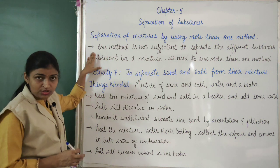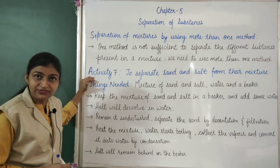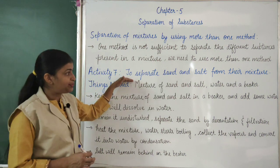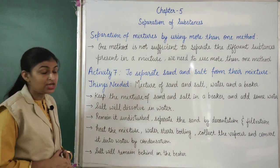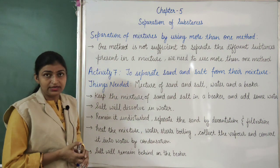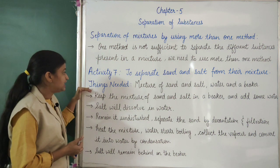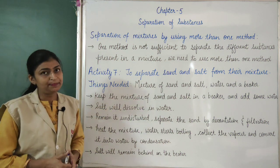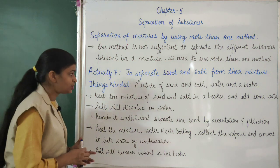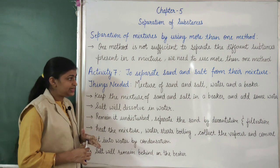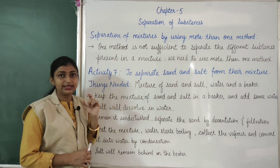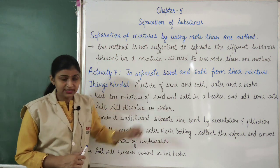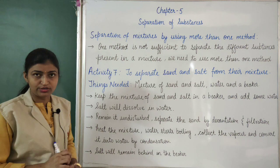To understand this more, we will do activity number 7 given in your book — to separate sand and salt from their mixture. Things needed are: a mixture of sand and salt, water, and a beaker. First, we will take this mixture of sand and salt in a beaker and add some water to it.